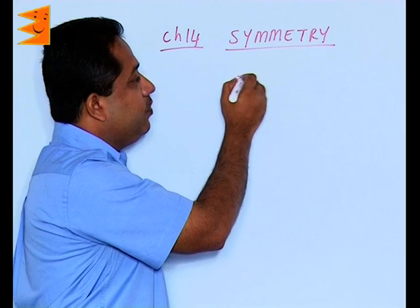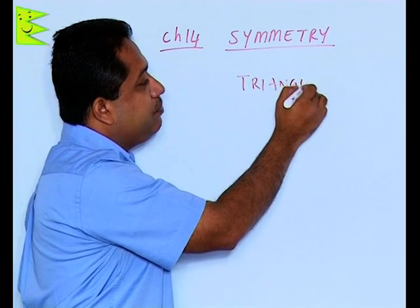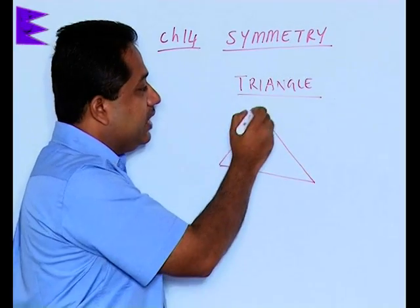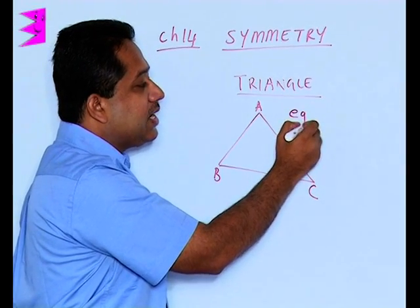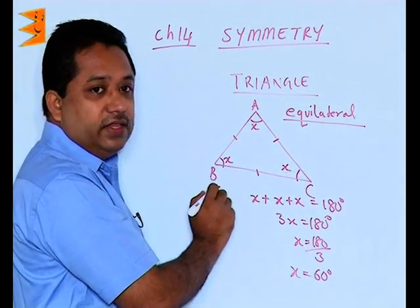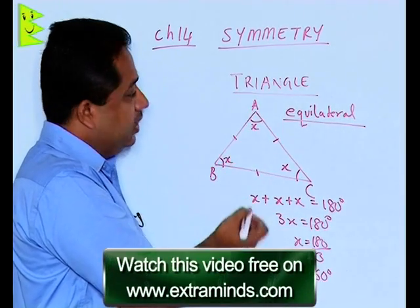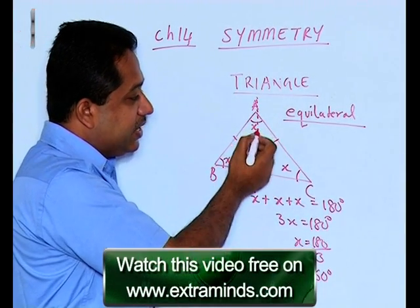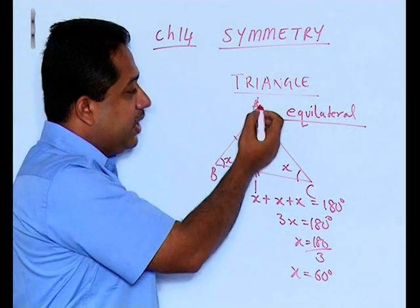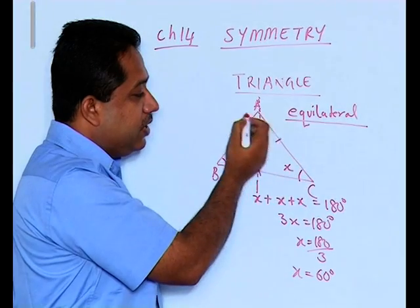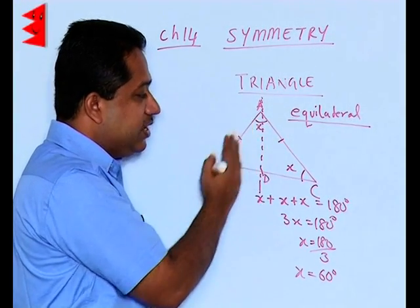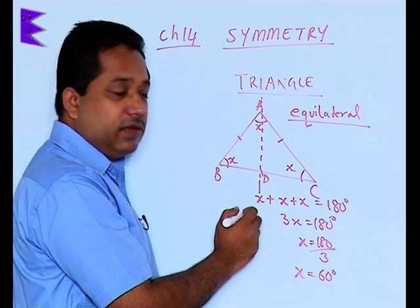Let us take the figure of a triangle. There are different types of triangles. A triangle could have all three sides equal to each other, and if all sides are equal, then we say that this is an equilateral triangle, where each angle is 60 degrees. If we divide this with the help of a line, on the right side and on the left side we find two small triangles. If we fold it along that line, this portion is going to coincide with the other. So this is one line of symmetry.